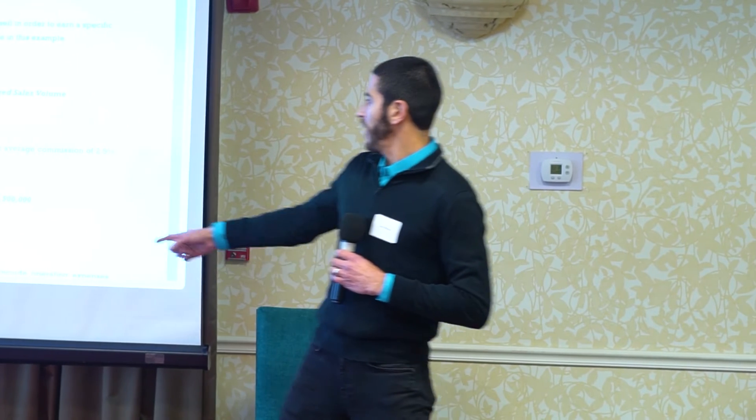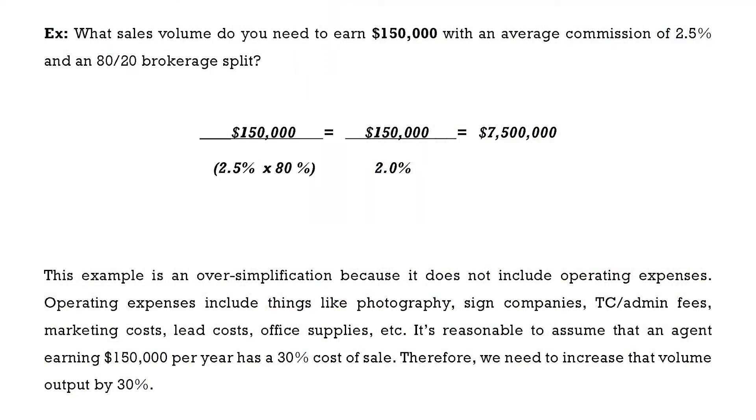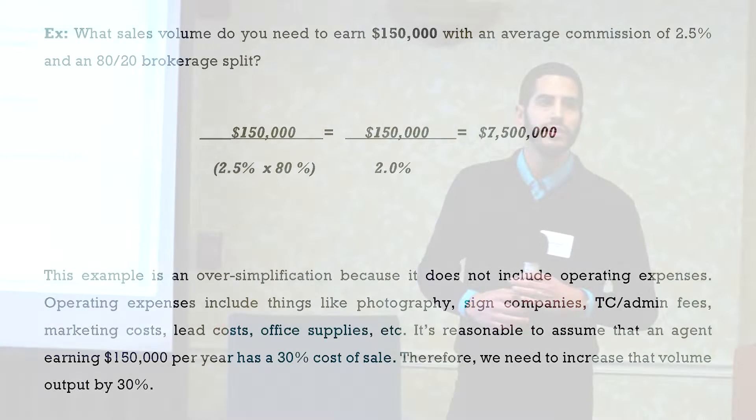Next, we take your goal income of $150,000 and divide it by 2%, which gives you $7.5 million. So if you're at a brokerage where your split is 80/20 and you sell about $7.5 million in real estate per year, you should earn $150,000. The one problem with that equation is it assumes you don't have any cost of sales.